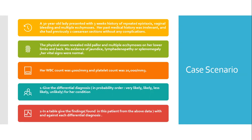Her past medical history was irrelevant, and she had previously two caesarean sections without any complication. The physical examination revealed mild pallor and multiple ecchymosis on her lower limbs and the back. There was no evidence of jaundice, lymphadenopathy, or splenomegaly, and her vital signs were normal.